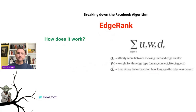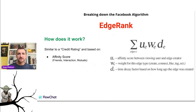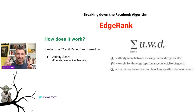The formula is sigma U E W E D E — the edges are E and it goes through the formula. It's similar to a credit rating that you would get for your credit when you go buy a house. It works in a similar fashion to how a credit score would work. The three things it really focuses on: number one is the affinity score — that's the score between the viewing user and somebody creating things called edges. An edge is when you like something, subscribe to a fan page, or look something up on Facebook. Every time you take an action on Facebook, Facebook calls that an edge.